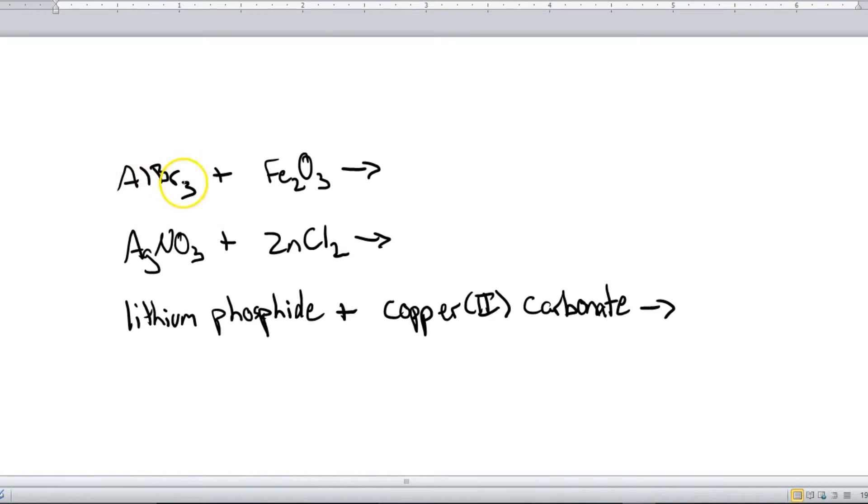First example. We have aluminum bromide and then iron oxide. Now it might look like there's just any possible thing that could come out over here, but there's really only one possible set of products that can come out. It's kind of like in math when you learn the FOIL method. Remember first, outside, inside, last. When you're multiplying things within a parenthesis, it's essentially the same thing. The positive ion from this compound is going to bond with the negative ion from the other compound, and then this positive ion will bond with this negative ion. So let me show you.